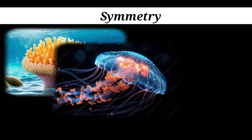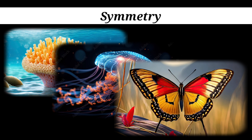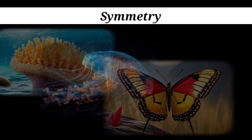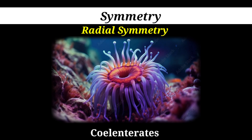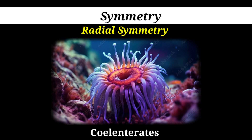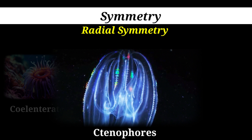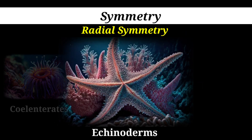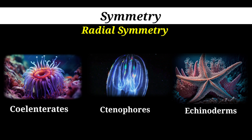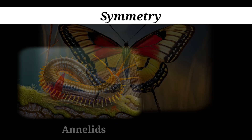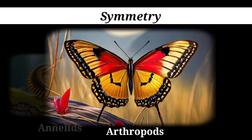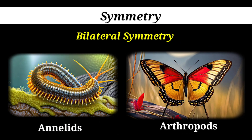Symmetry is another feature by which animals are classified. They can be asymmetrical, like sponges, or have radial symmetry, like cnidarians, ctenophores, and echinoderms. However, most animals, like annelids and arthropods, have bilateral symmetry.